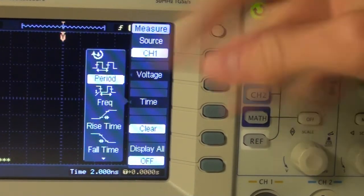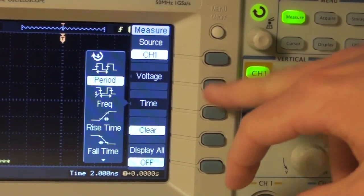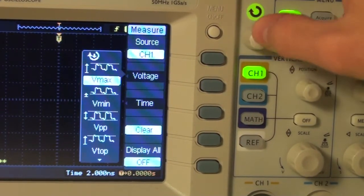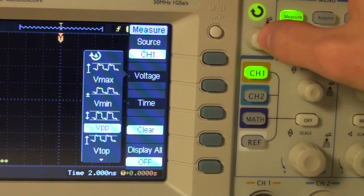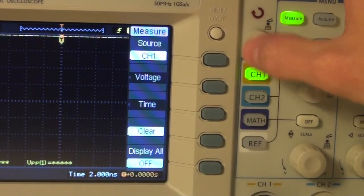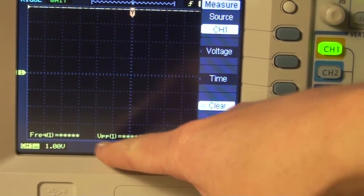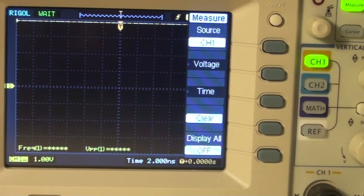For example, if we want to measure the voltage of our input signal, we can go to voltage and select VMAX or VPP, which is the voltage difference. Now VPP has been enabled and it is shown down at the bottom.